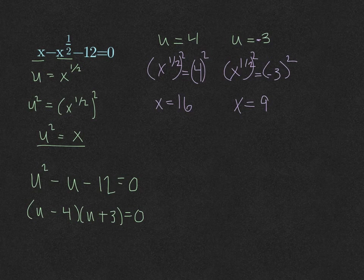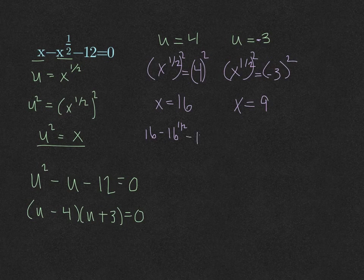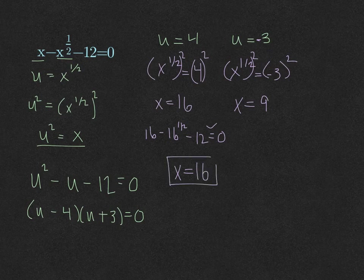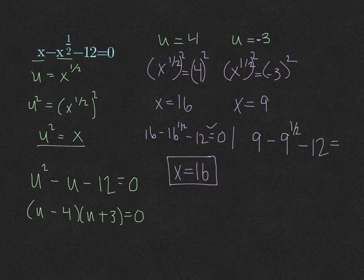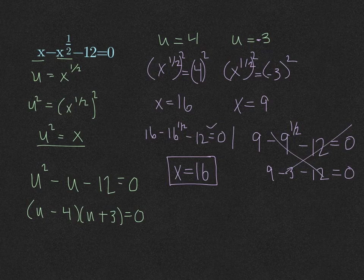Because the original problem had a one-half power — meaning a square root — we need to check for extraneous solutions. Checking x equals 16: 16 minus the square root of 16 minus 12 equals 16 minus 4 minus 12, which equals zero. So x equals 16 is a valid solution. Checking x equals 9: 9 minus the square root of 9 minus 12 equals 9 minus 3 minus 12, which equals negative 6, not zero. So x equals 9 is extraneous and our only solution is x equals 16.